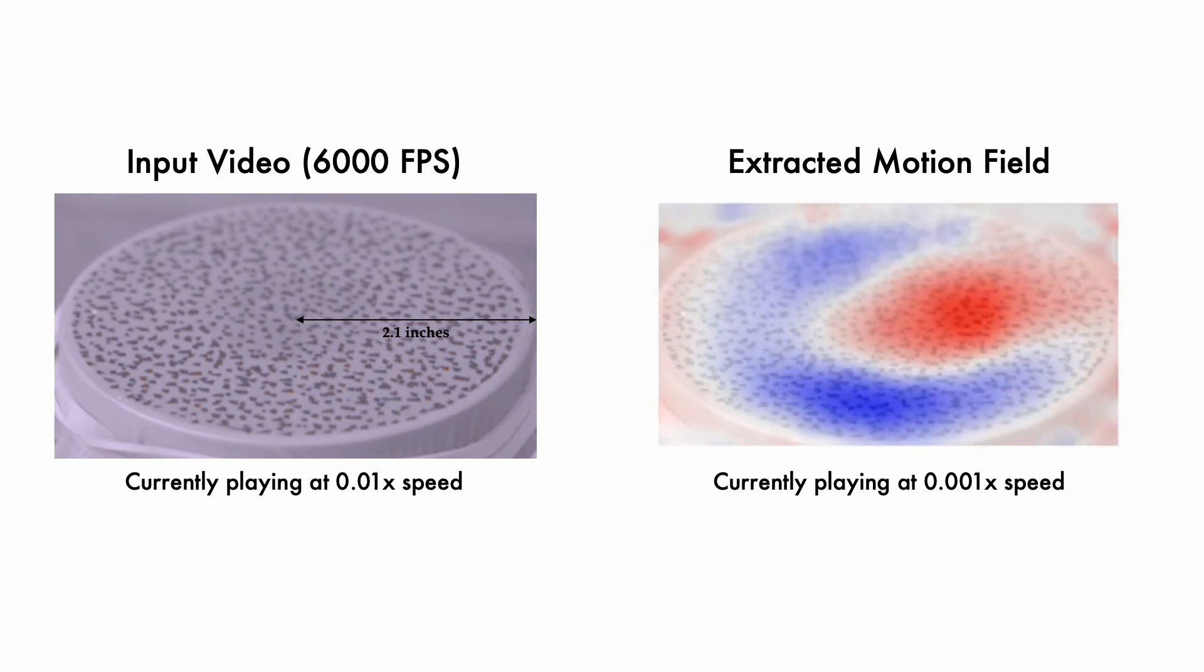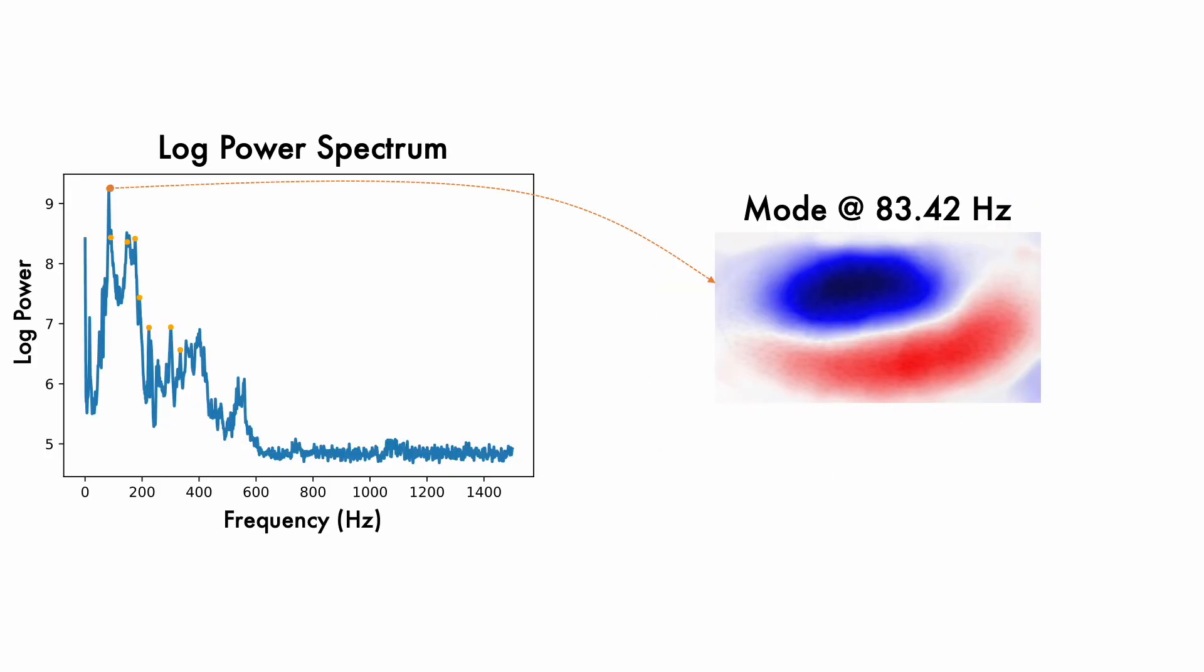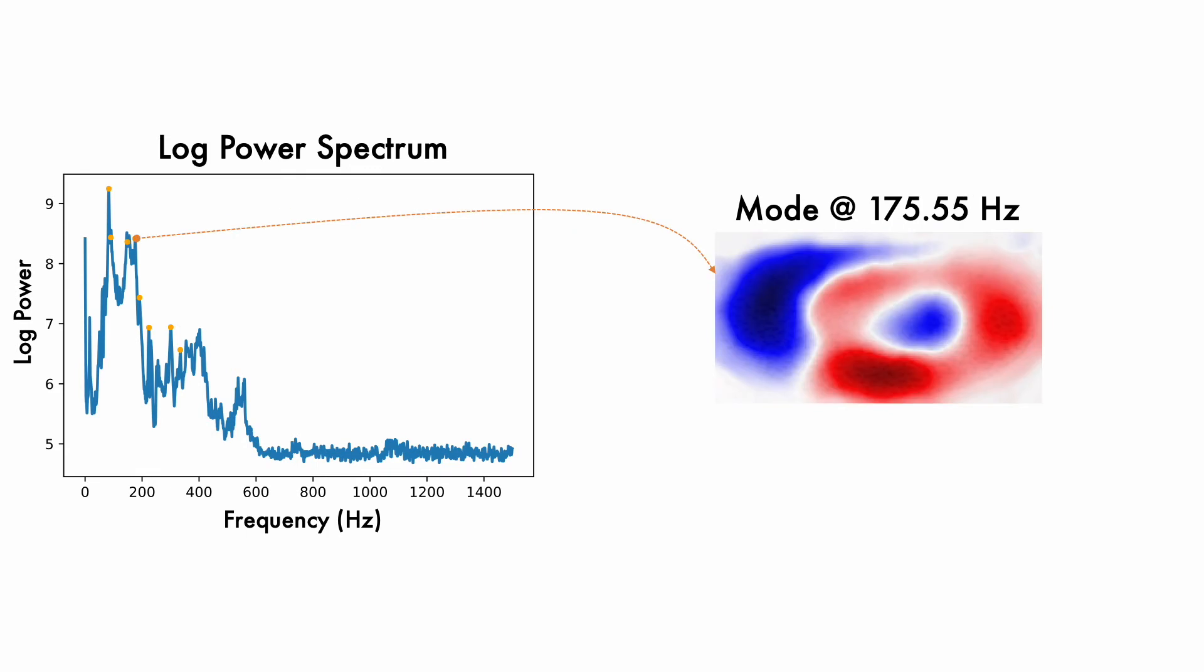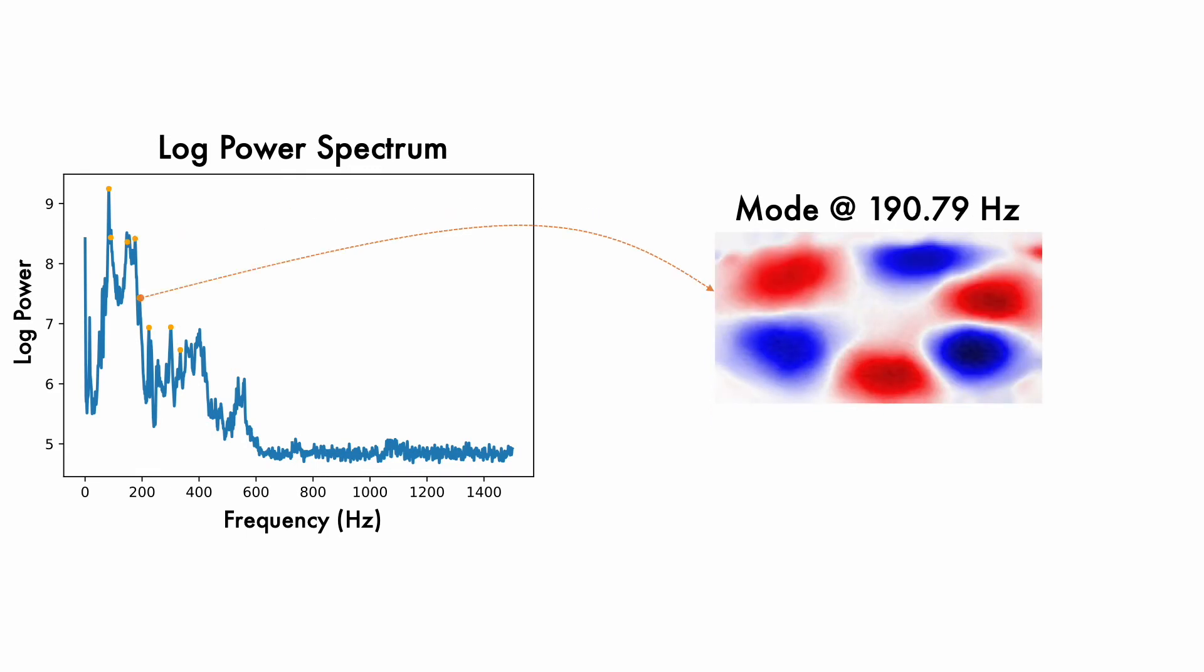Following our method, we start by extracting the motion fields across time. From the log power spectrum of motion amplitude, we identify image space modes present in the video.